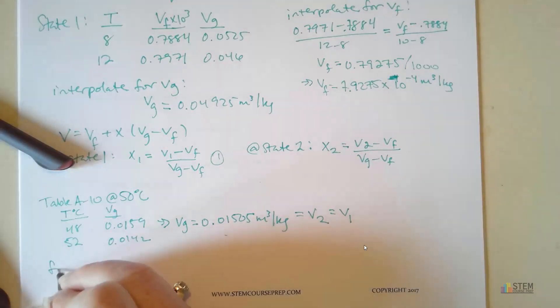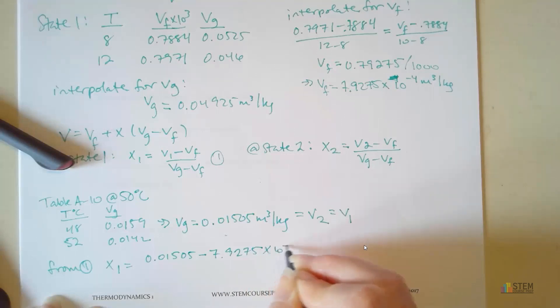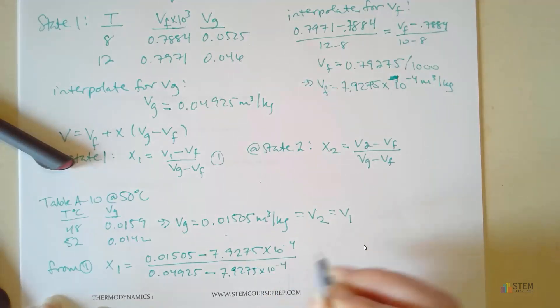So let's use our equation 1 and plug in our numbers. So X1 is going to be 0.01505 minus 7.9275 times 10 to the negative 4th. We're going to put that over 0.04925 minus 7.9275 times 10 to the negative 4th. That gives us 0.294. So this is our quality for state 1.